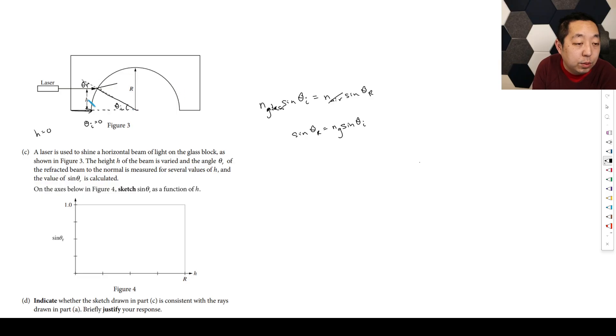And so what we're trying to figure out is what is the sine of theta i. So sine of theta i, you could think of it as a right triangle. Sine of theta i is equal to opposite over hypotenuse, so it's the height over the radius. So that means sine theta i is equal to h over r. So that means sine of theta r is equal to ng times h over r.